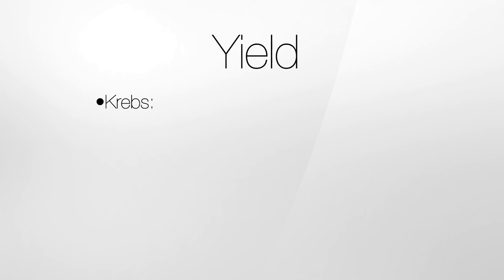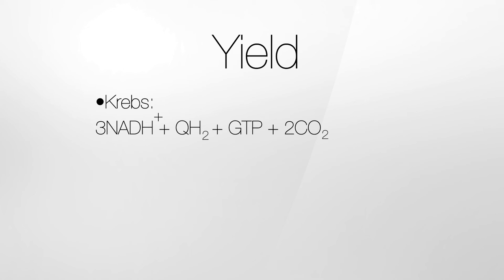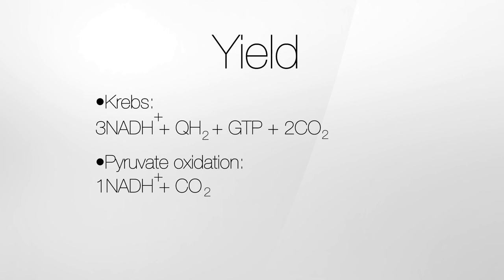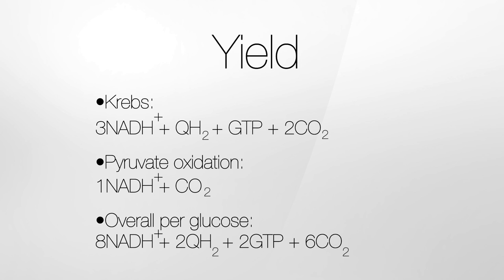Each turn of the Krebs cycle yields 3 NADH, 1 QH₂, 1 GTP, and 2 carbon dioxide. The oxidation of pyruvate yields 1 NADH and 1 CO₂. So overall, per molecule of pyruvate, the Krebs cycle gives 8 NADH, 2 QH₂, 2 GTP, and 6 CO₂.